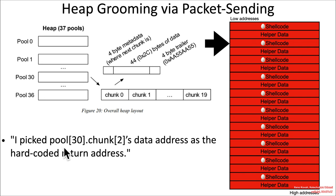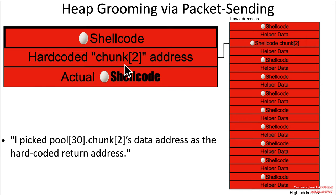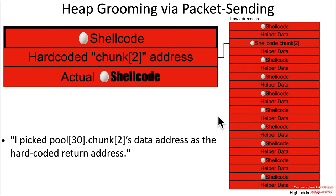She chose pool 30 chunk 2 as a data address hardcoded in, so no matter what is ultimately used for the heap overflow, it's always going to point there and execute that shellcode. This is possible because of the lack of address space layout randomization and the lack of non-executable memory in the context of this firmware, making the exploit somewhat simpler than what you'd find on a modern operating system.